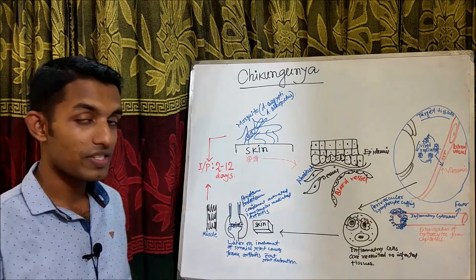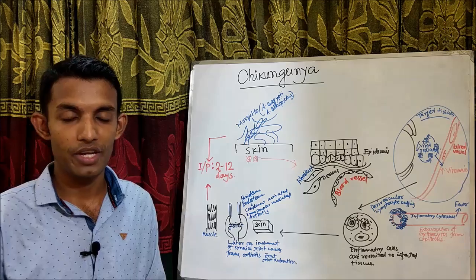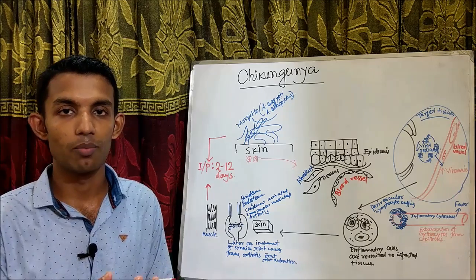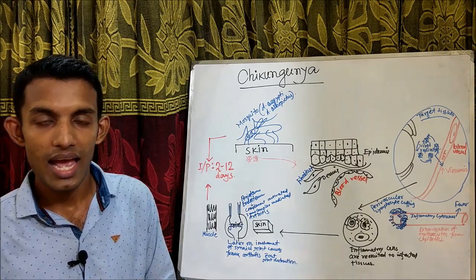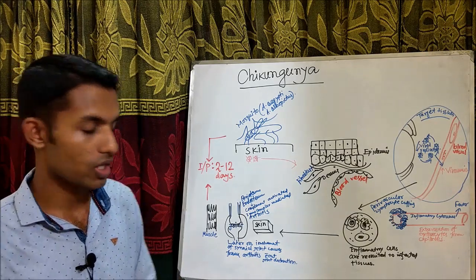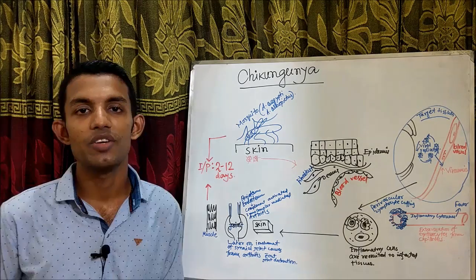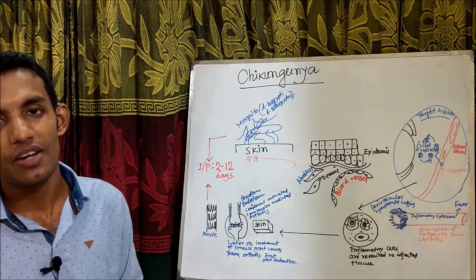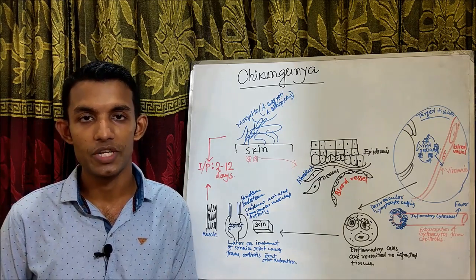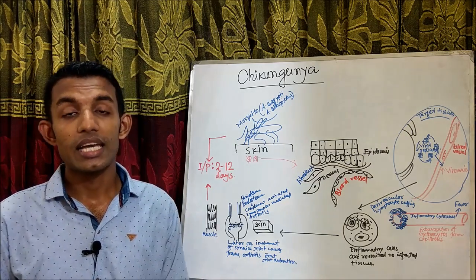The joints including the fingers, wrist, elbow, knee, ankle, and toes are inflamed in response to viral replication and inflammatory infiltrates.